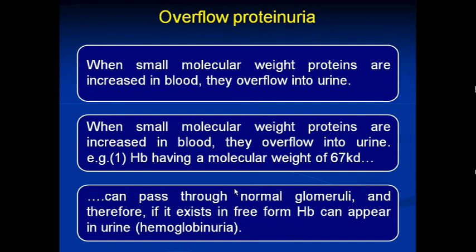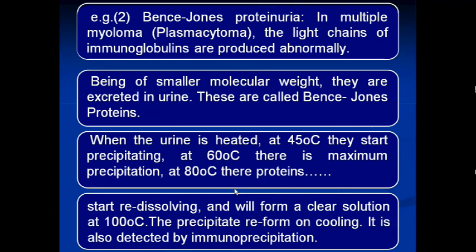The next type is overflow proteinuria. When small molecular weight proteins are increased in blood, they overflow into urine. One example is hemoglobin, having a molecular weight of 67 kDa, which can pass through normal glomeruli and appears in urine in free form — the condition is known as hemoglobinuria. A second example is Bence Jones proteinuria, seen in multiple myeloma where light chains of immunoglobulin are produced abnormally and excreted in urine due to their small molecular weight.